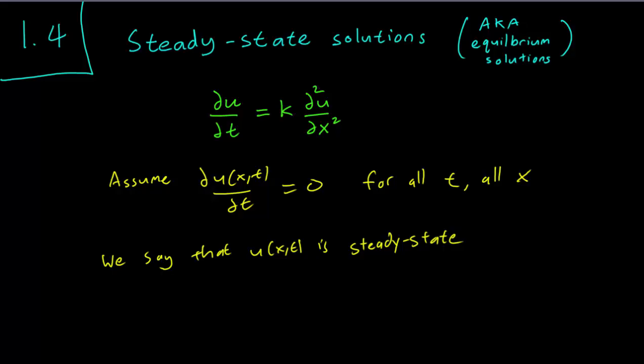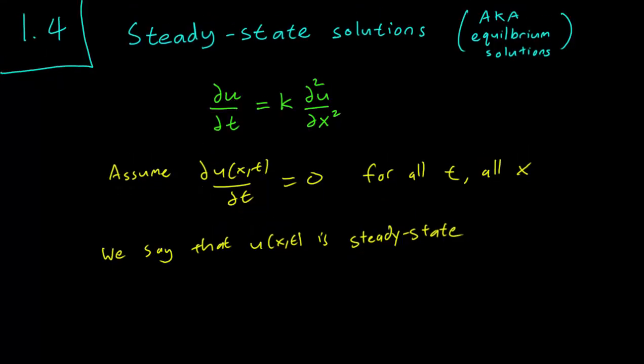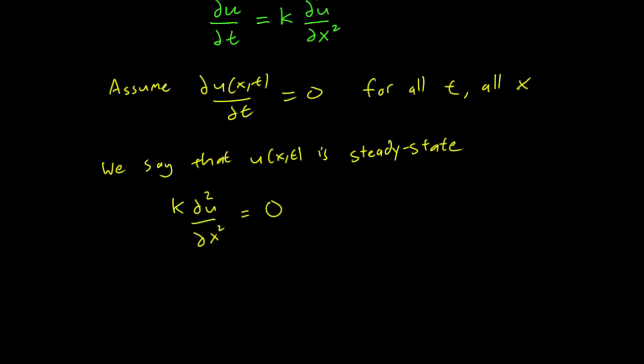Let's figure out how to find the steady state solution. We take our assumption and plug it in to our heat equation problem. So we have k ∂²u/∂x² equals ∂u/∂t. But we know that the derivative with respect to t of u is zero. So this becomes zero. And we can divide both sides by k since k is never zero. So you end up with the second partial derivative of u equals zero.